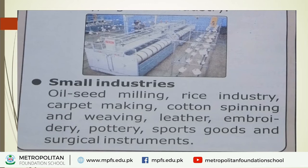Question number three: Can you make a list of things which come from industry? Answer: Cloth, ghee, sugar, paper, cement, iron, steel, carpet, leather goods, sports goods, surgical instruments, cars, buses, and many electrical items like television, sewing machine, refrigerator, etc. These are all things that industry provides us — our daily routine items that come from industry.